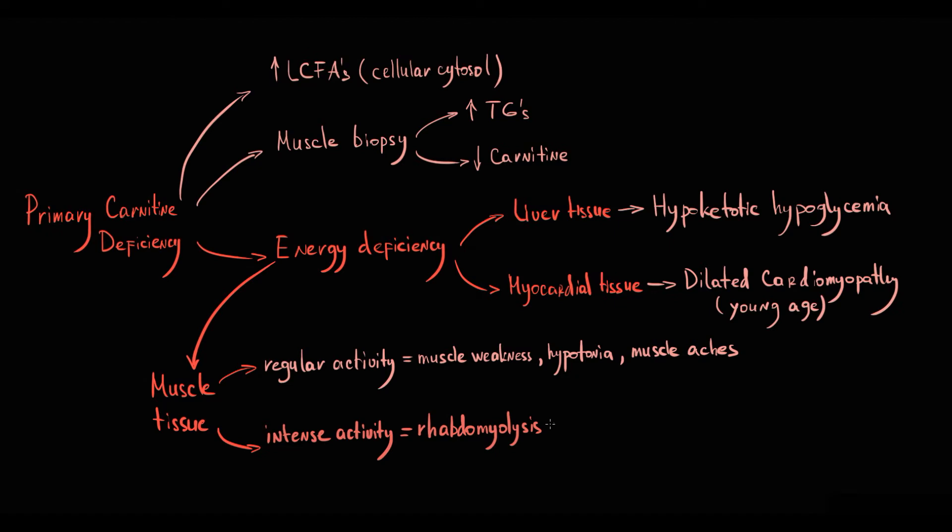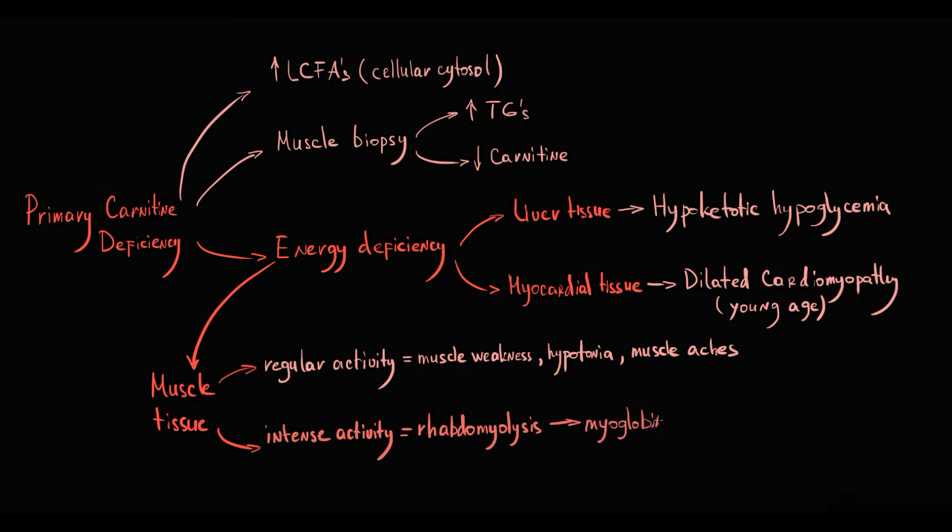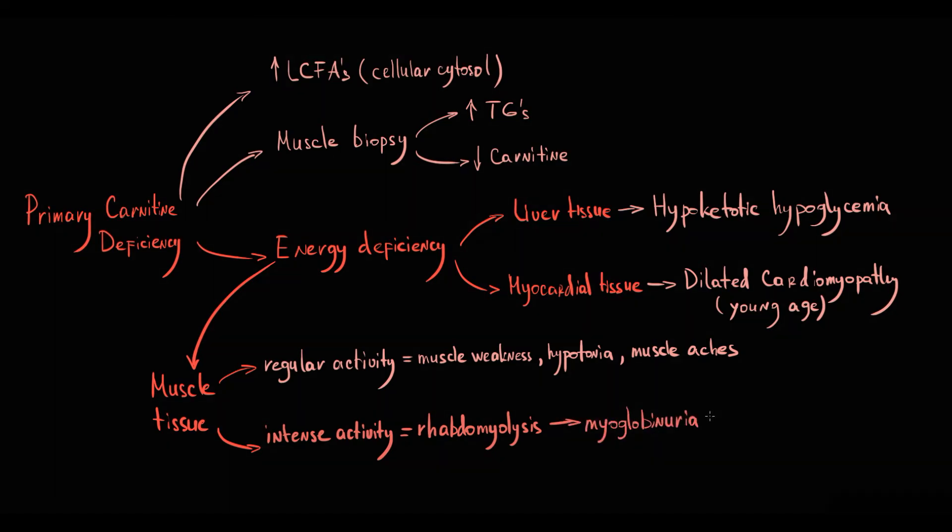Destruction of skeletal muscle cells results in release of myoglobin that then appears in the urine, a condition known as myoglobinuria.